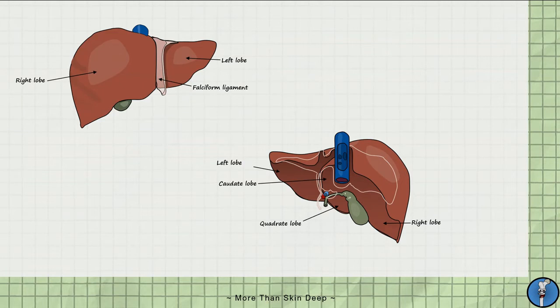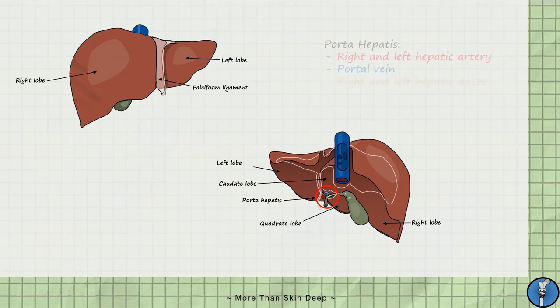They are separated by a deep fissure known as the porta hepatis. This is a key confluence region in the liver, as it contains the vascular entry and exit of the right and left hepatic arteries, accompanied by the portal vein. The right and left hepatic ducts joining bile away from the liver also exits via the porta hepatis.